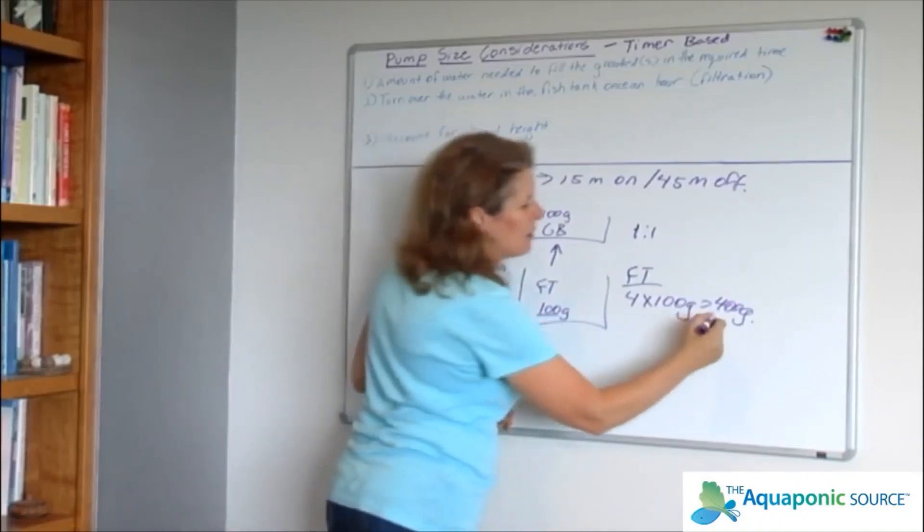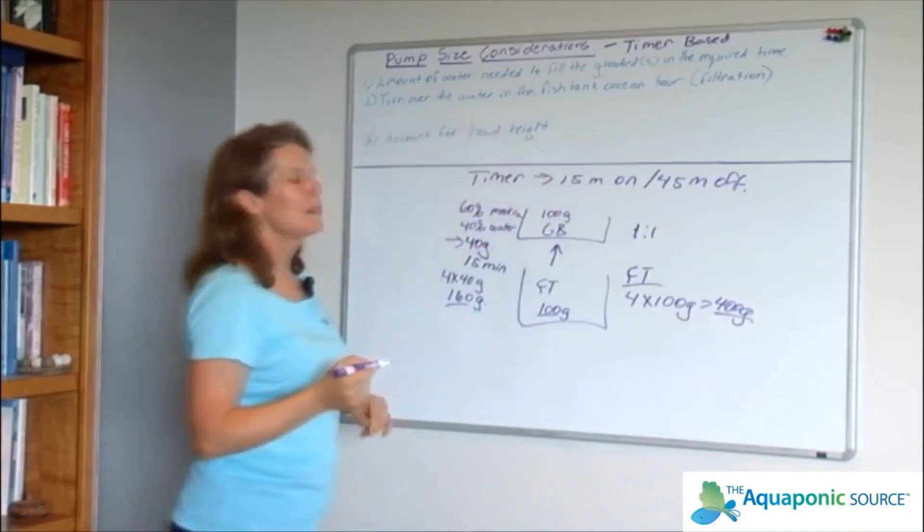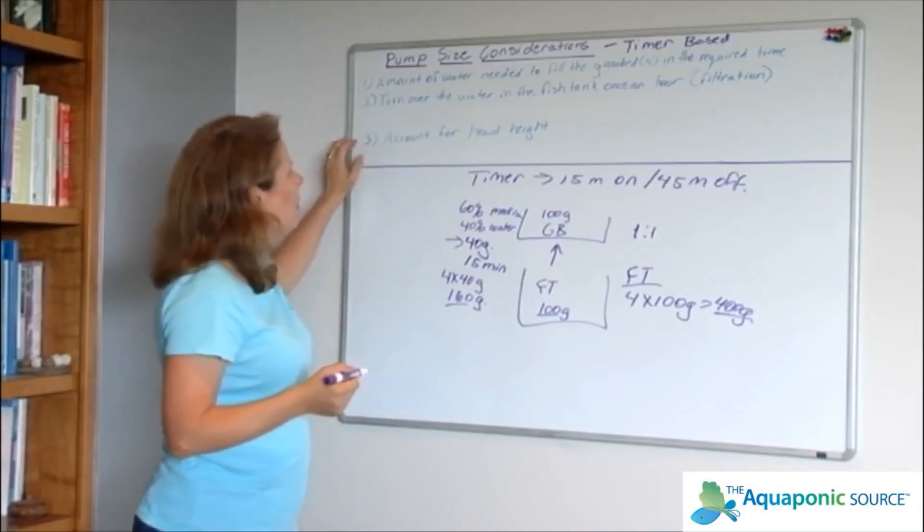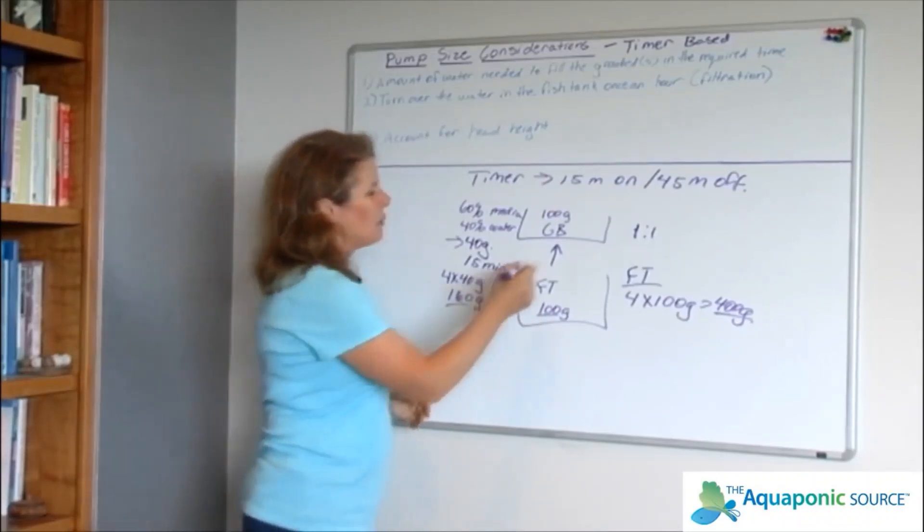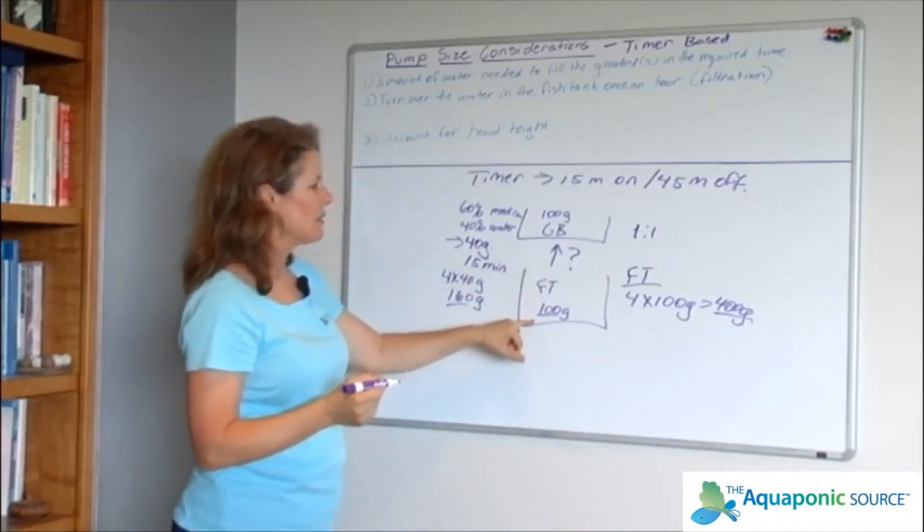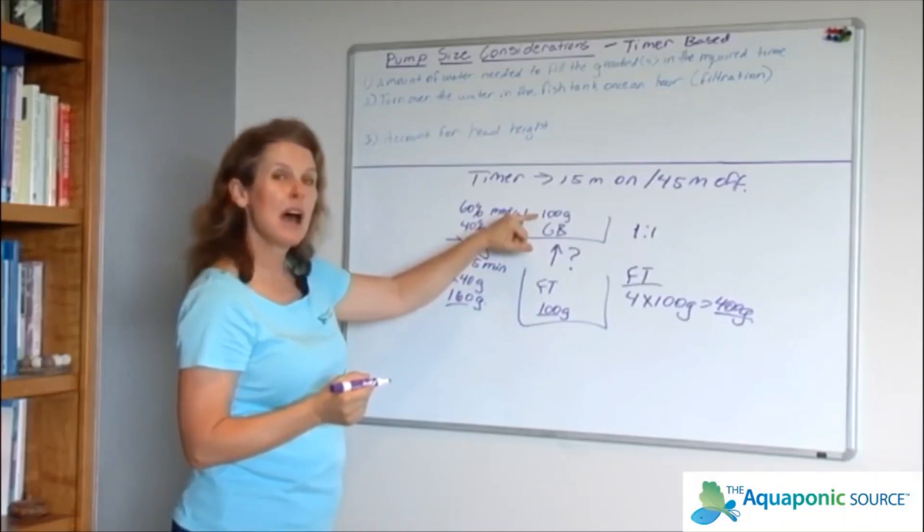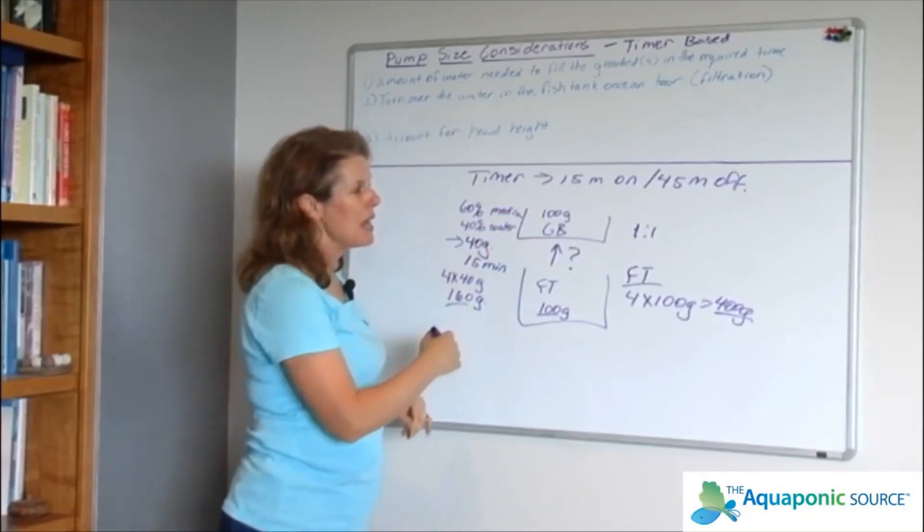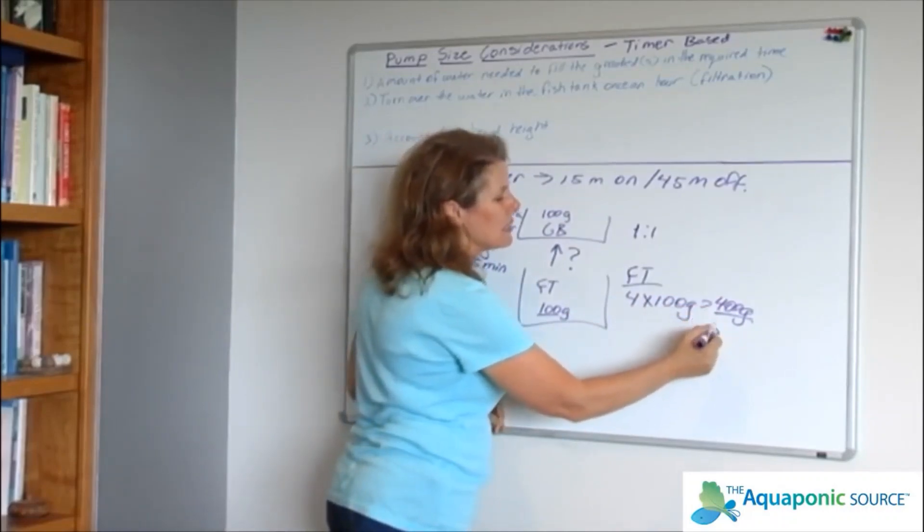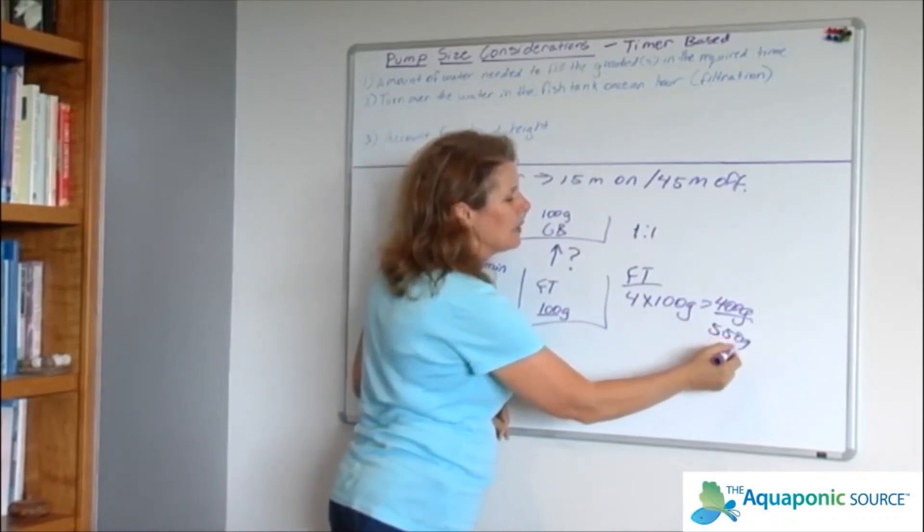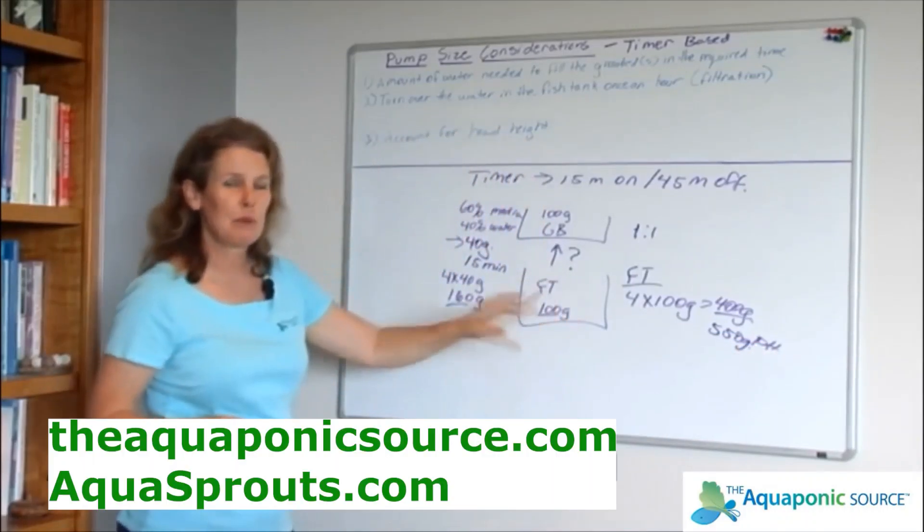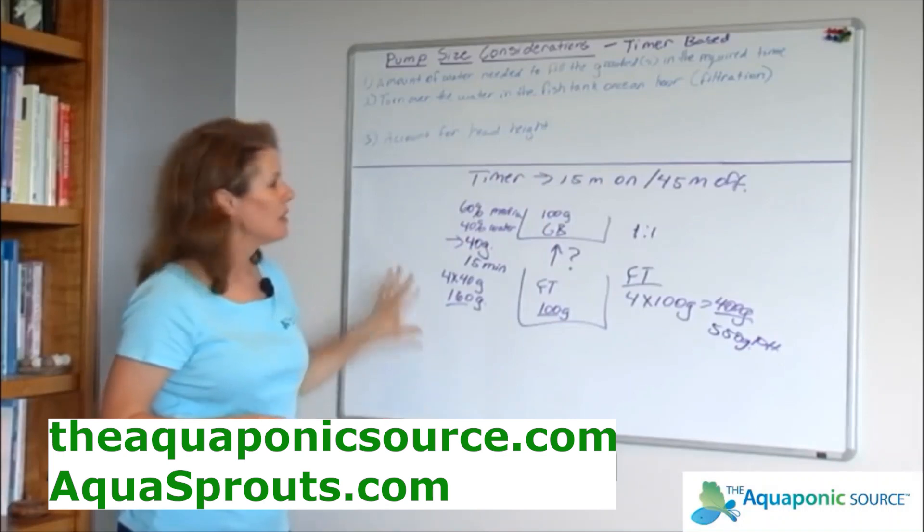Now I want to account for head height. Whatever the distance is between where the pump is in the fish tank and the top of the grow bed, that's going to be my head height. That is probably going to cause this to need to go up to a 550 gallon per hour or even an 800 gallons per hour pump. Okay, so that's how this works on a timer based system.